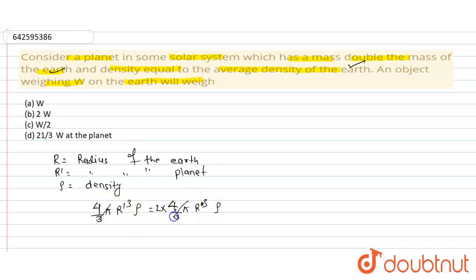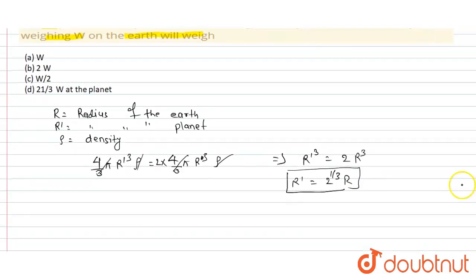4/3 π is a constant term and ρ is constant, so this becomes R'³ equals twice of R³. And we see that R' equals 2^(1/3) R. So we use this term for calculating the weight.